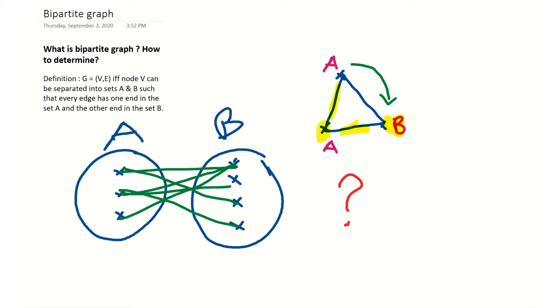As per the definition, this cannot happen, hence this graph is not a bipartite graph. Let's see another example.